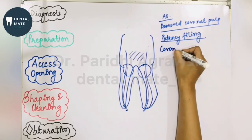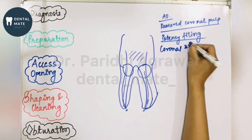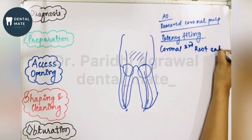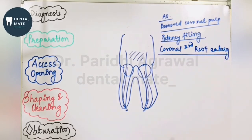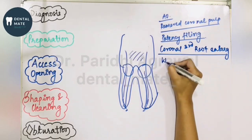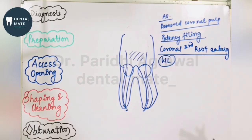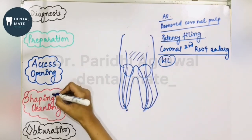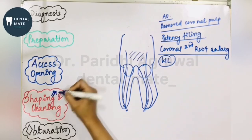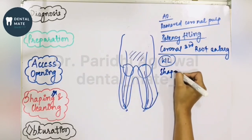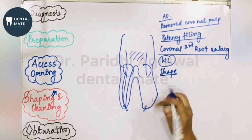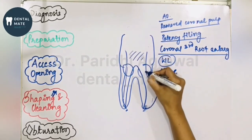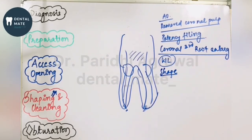After coronal enlargement, you determine the working length. Once the working length is determined, you proceed to shaping — we are now in the shaping phase — and you shape the canal accordingly.